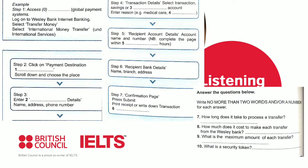Right, I found it. Now click on Payment Destination Country and scroll down to the location you wish to send money to. It's all in alphabetical order. Yes, Zimbabwe. I've got it, right at the bottom. Good. Then step three is to fill in your personal details: name, address and contact phone number.